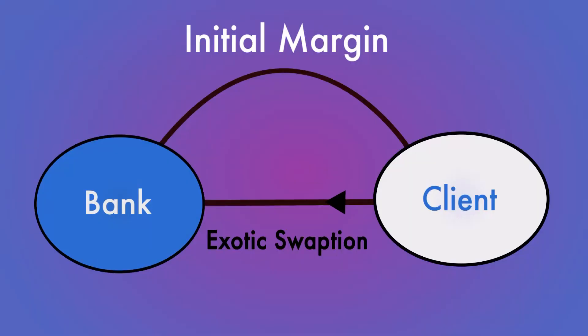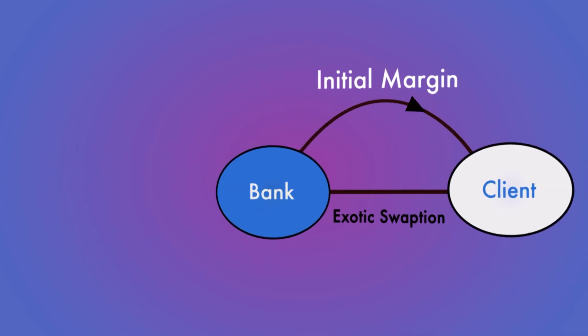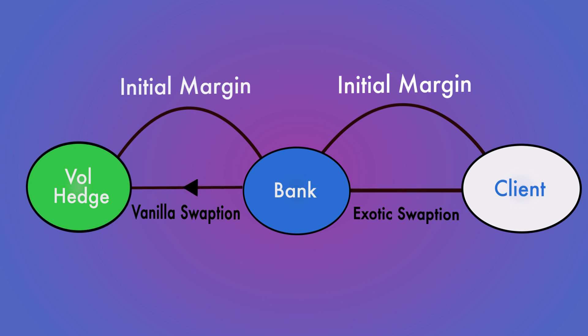I'll also discuss some important conceptual issues within MVA — for example, hedge side initial margin requirements. We tend to think about MVA in terms of a given portfolio, often a client portfolio. In a practical trading setting, however, it's important to think also about the initial margin requirements for that portfolio's hedges. A simple example might be that we have an exotic interest rate derivative with a client, hedged by vanilla European swaptions and swaps with other banking counterparties. It's important to capture the cost of funding that initial margin as well in a total MVA for this portfolio.